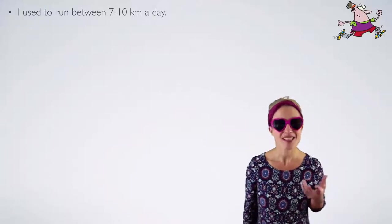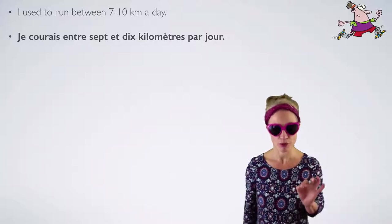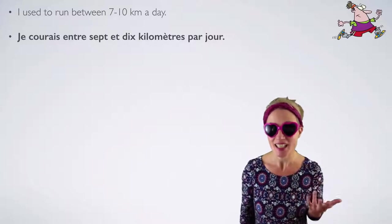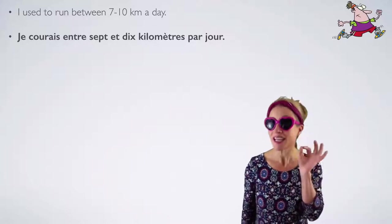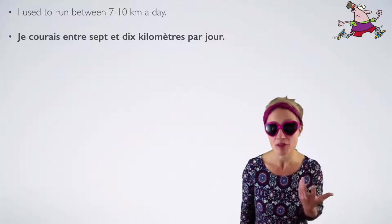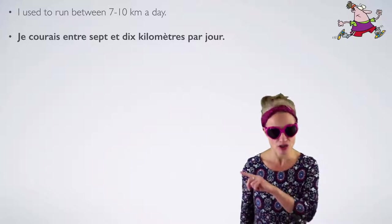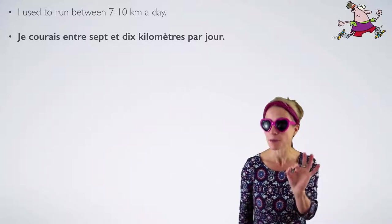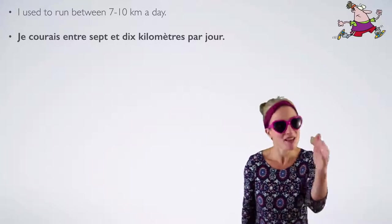'I used to run between 7 and 10 kilometres a day' — Je courais entre 7 et 10 kilomètres par jour. Because the word 'dix' (10) is followed by a noun starting with a consonant, you will often hear 'dix kilomètres.' If it started with a vowel, you could merge the 'dix' to the vowel, like 'dix oranges.' The number on its own when counting is 'dix,' but here it's acting like an adjective.